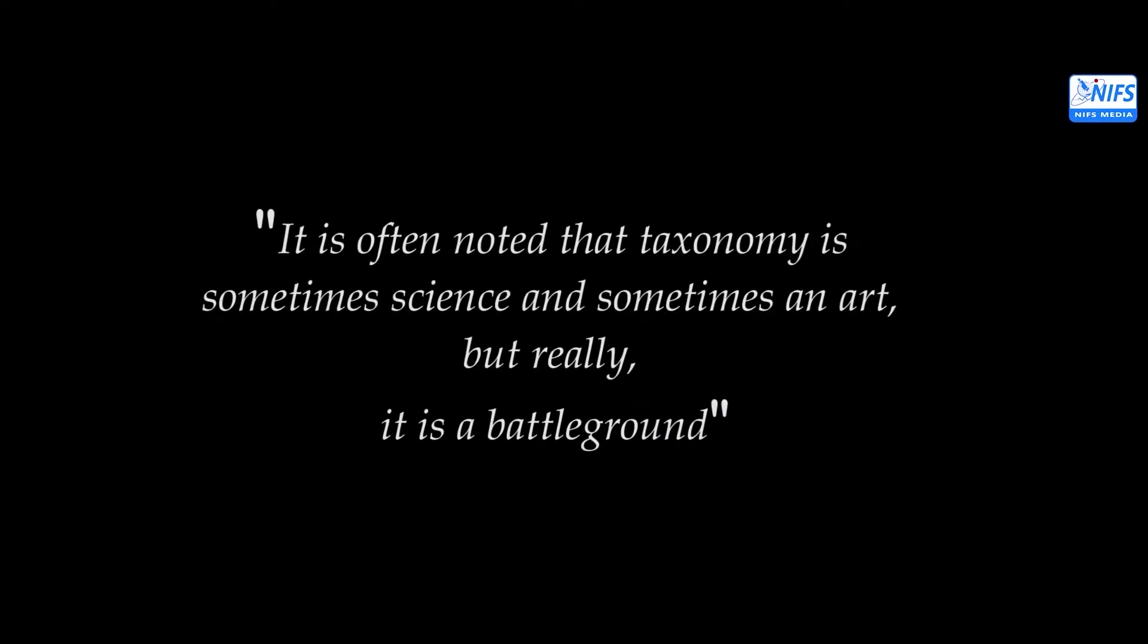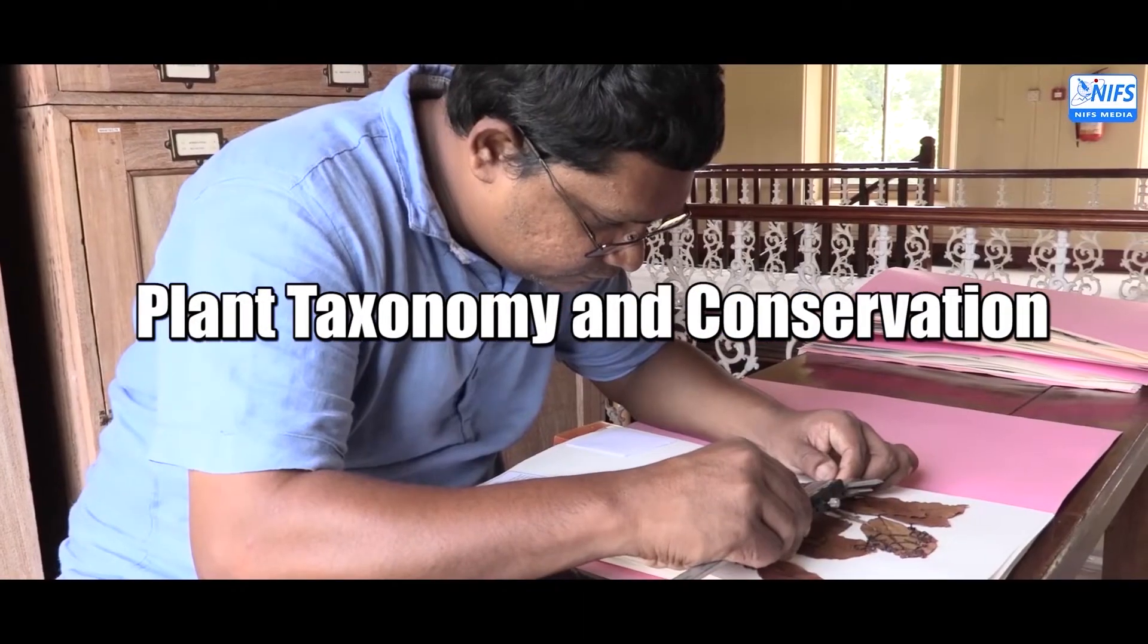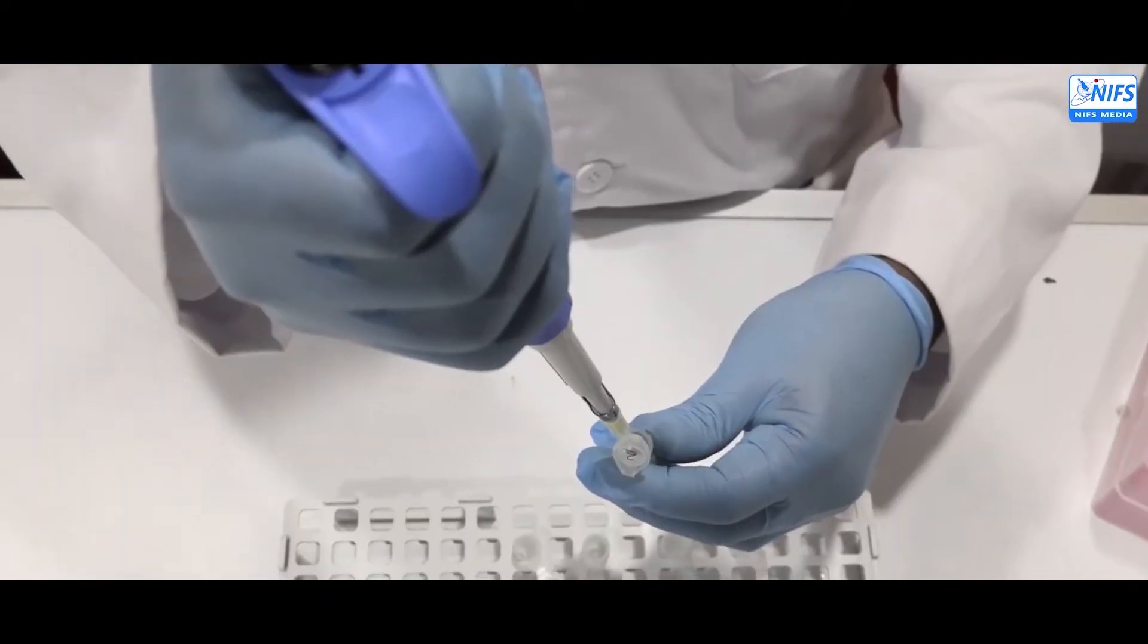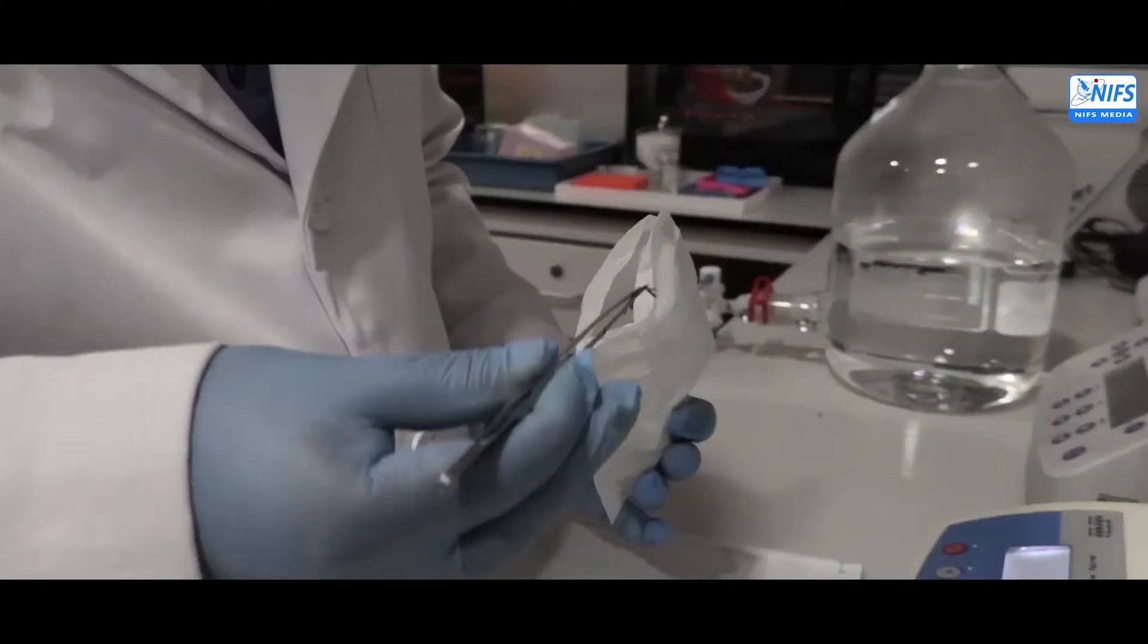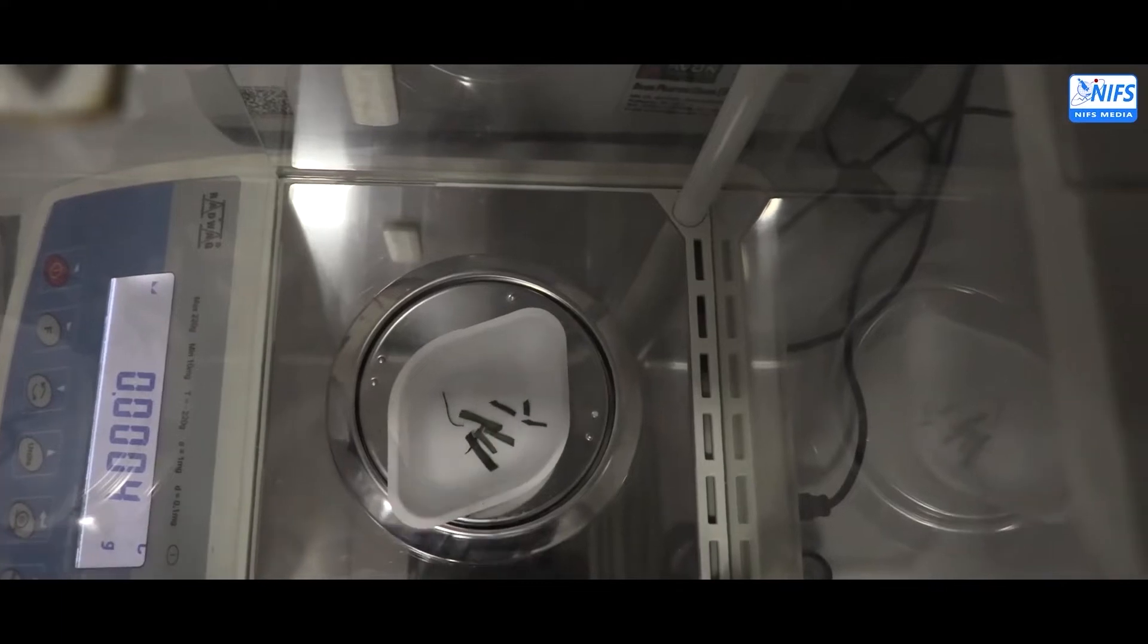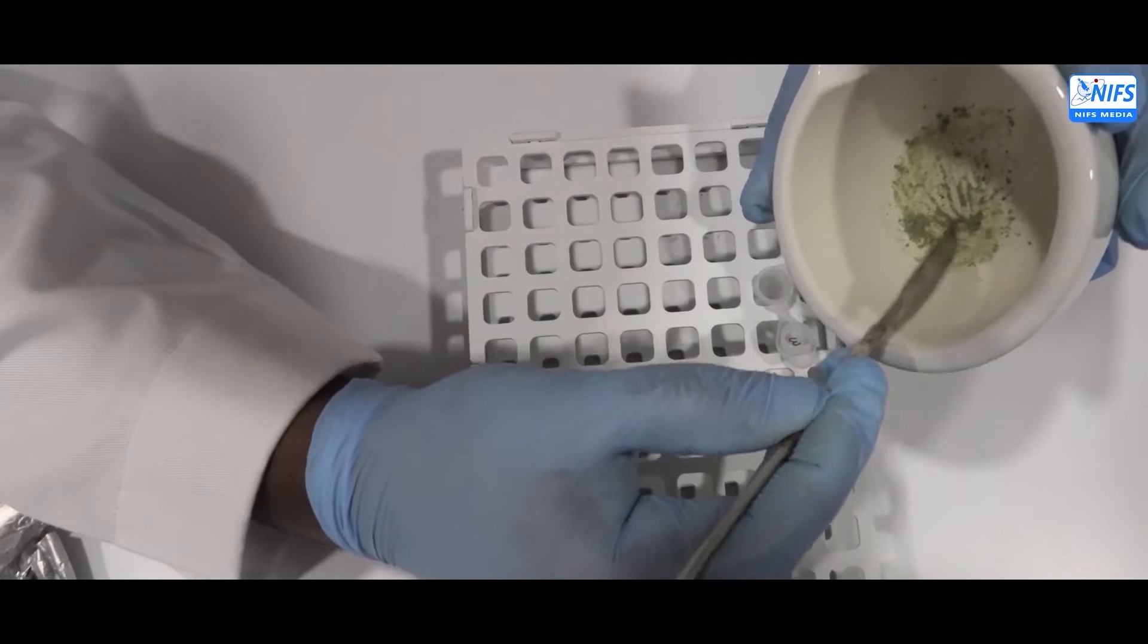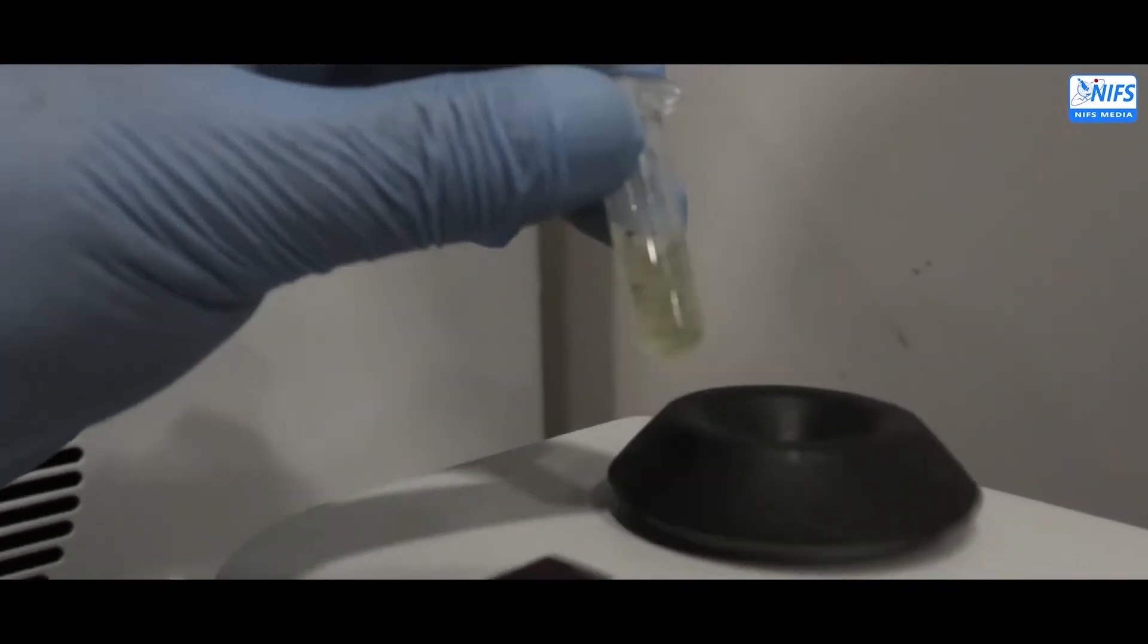It is often noted that taxonomy is sometimes science and sometimes an art, but really, it is a battleground. The NIFS Plant Taxonomy and Conservation Group is involved in taxonomic and biogeographic studies of flora of Sri Lanka, preparation of the National Red List for flora, sustainable use of plant resources, identifying factors that affect the conservation of the flora of Sri Lanka, including the prevalence of invasive alien species and restoration of ecology.